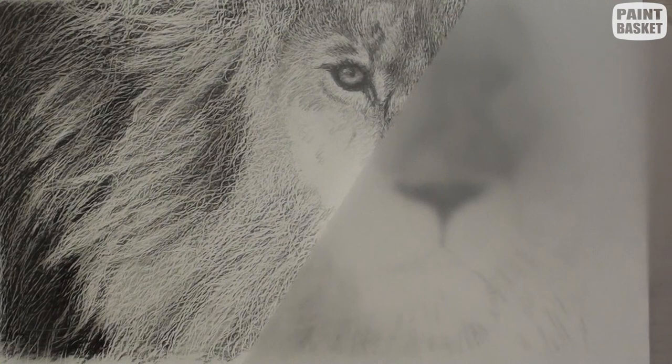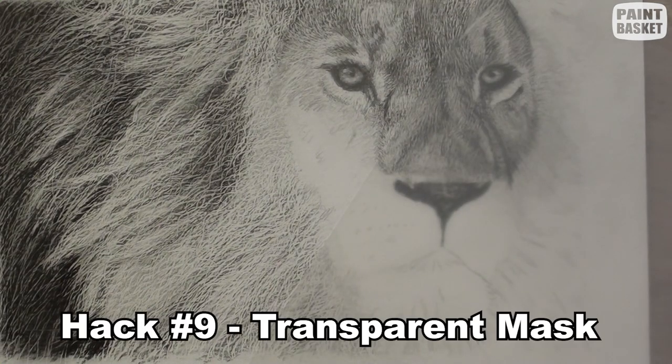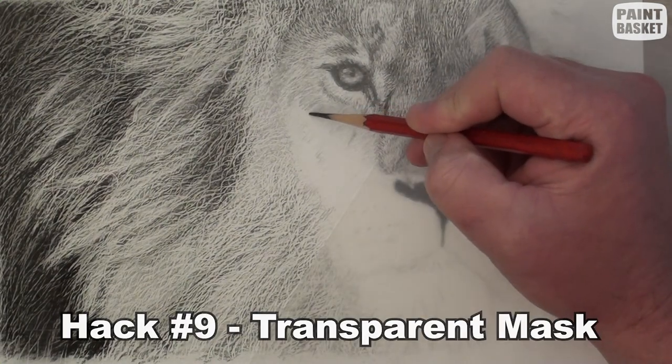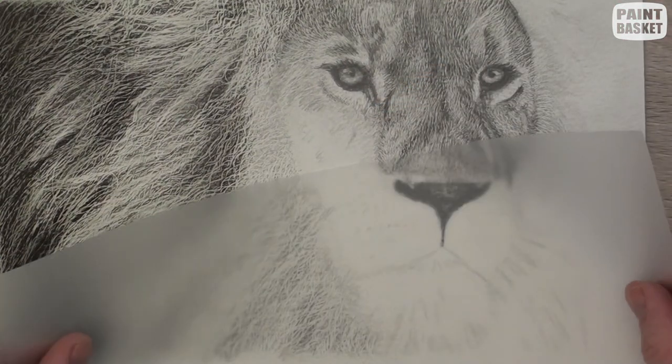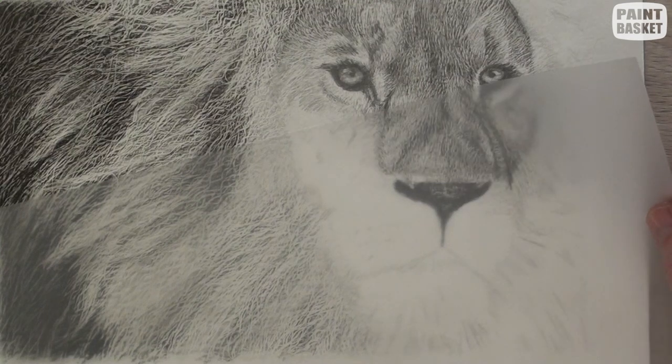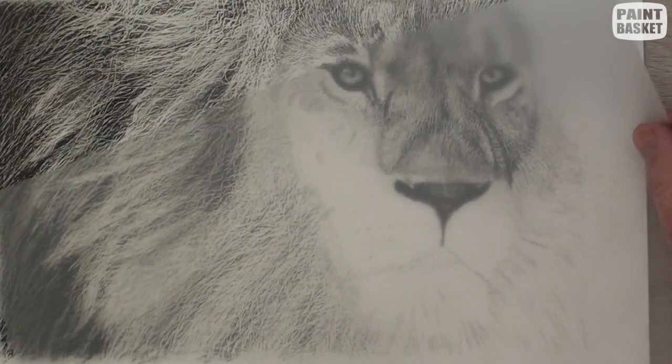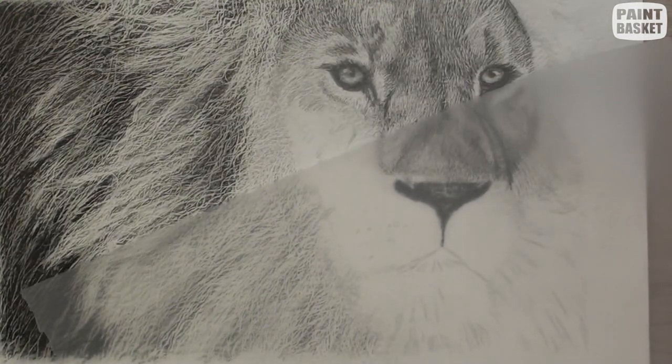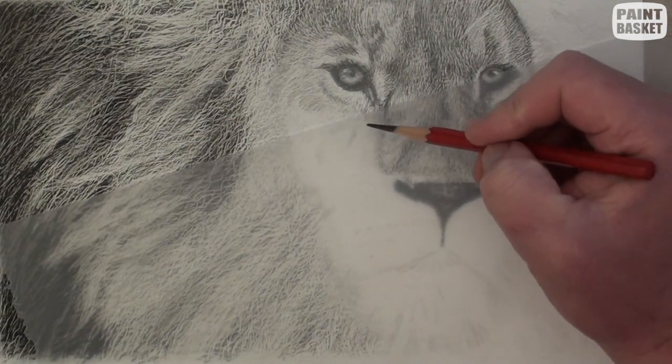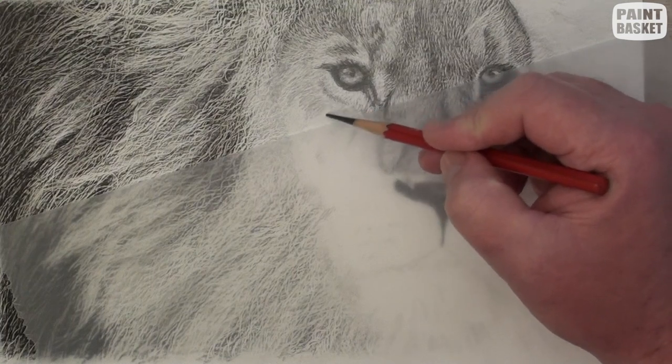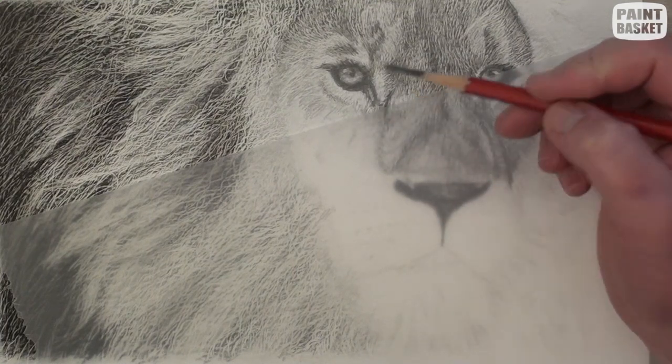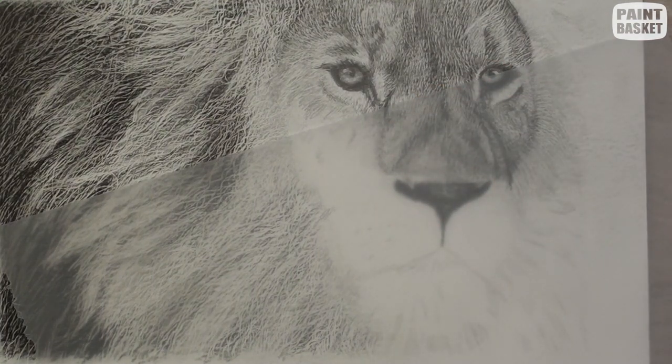Hack number nine builds on hack number eight: use a transparent sheet of paper under your hand. When using a transparent sheet of paper, you can see what's underneath so you never lose the bigger picture while drawing. You can use any non-oily transparent paper like a sheet of transparency, wax paper, or even parchment paper.